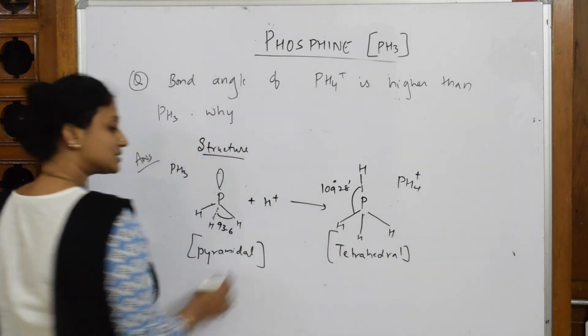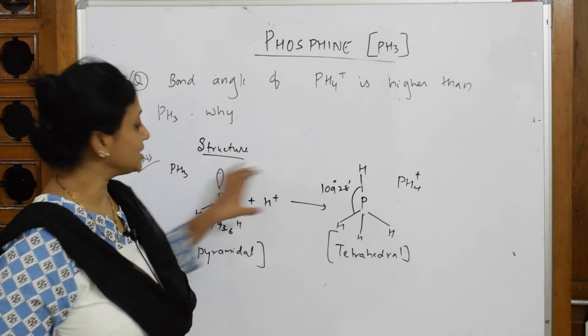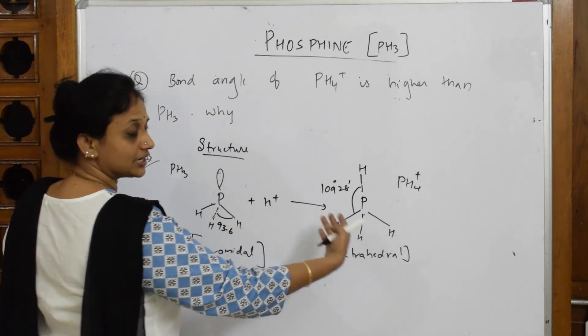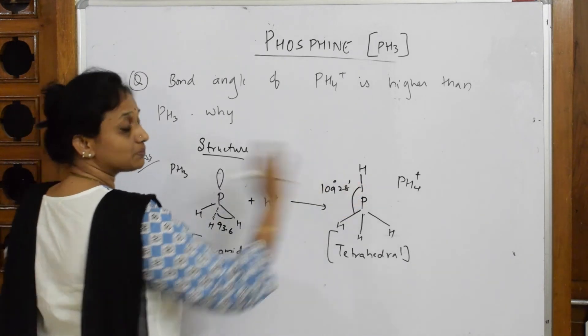Now they ask why the bond angle of this is higher than this. Simple - what is the difference between these? There are three hydrogens here and also three hydrogens here. There's a lone pair here and a bond pair there.